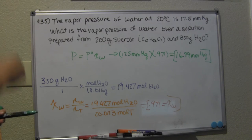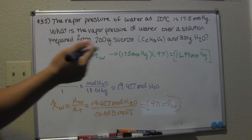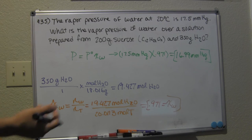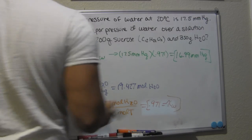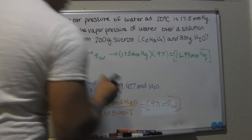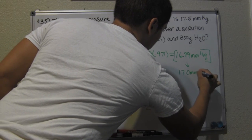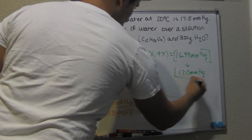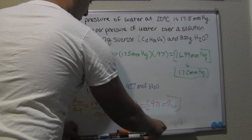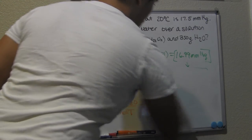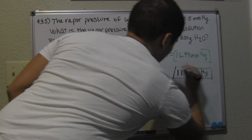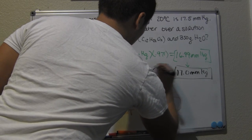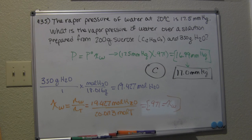If you're doing this problem from the same problem set, they actually round it up to 17.0. It would be appropriate to round because of significant figures — you have three significant figures here, three here, and three here — so it's proper to round to 17.0 millimeters of mercury. The final answer is 17.0 millimeters of mercury, which is answer choice C. I hope everything makes sense — thanks for watching, enjoy.